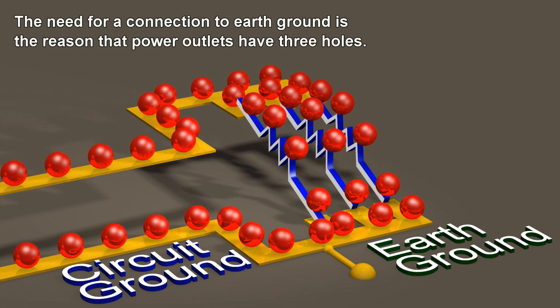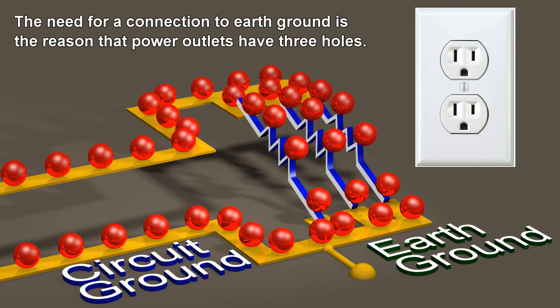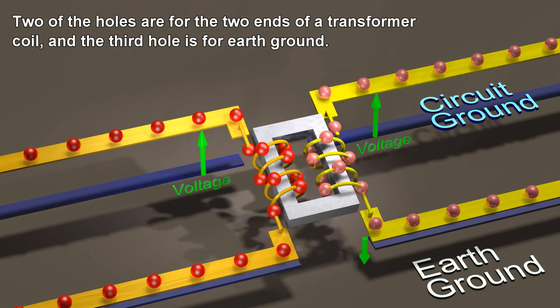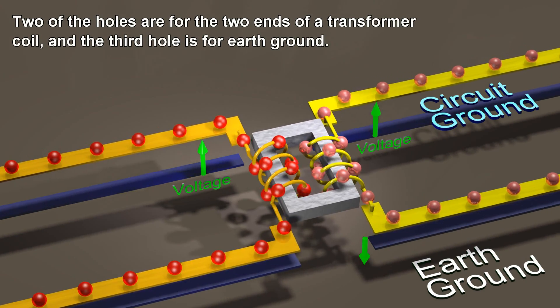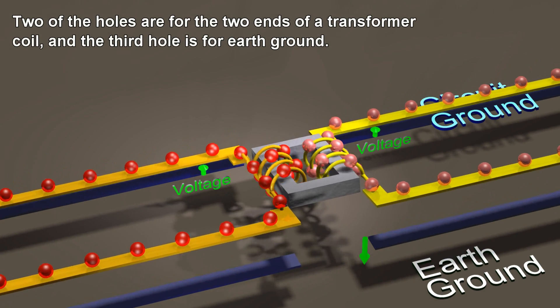The need for a connection to earth ground is the reason that power outlets have three holes. Two of the holes are for the two ends of a transformer coil, and the third hole is for earth ground.